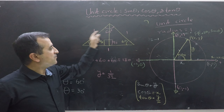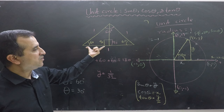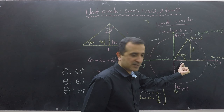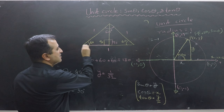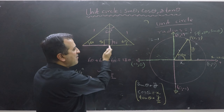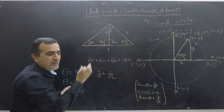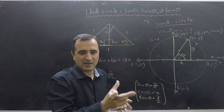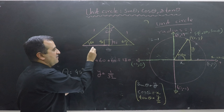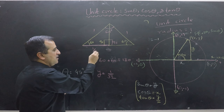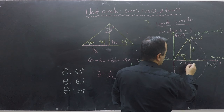Since we doubled the triangle, our original x is exactly half of the equilateral side, so x = 1/2. Now we need to find y using Pythagoras: x² + y² = 1, giving y² = 1 − 1/4 = 3/4.